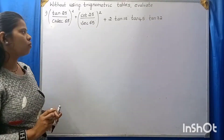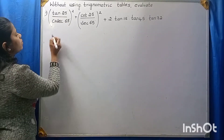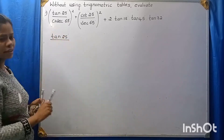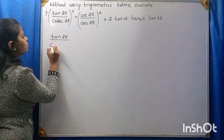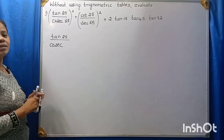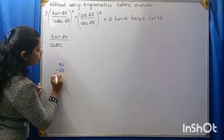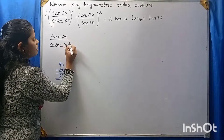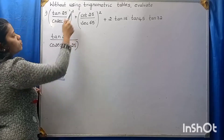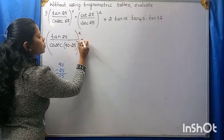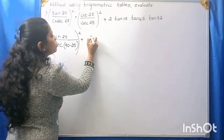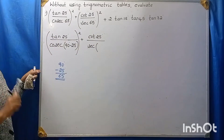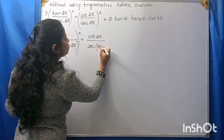Let's evaluate the value of this. Tan 25° divided by cosecant 65°. This 65 I can write as 90° minus 25°, because 90 minus 25 is 65. Therefore, this 65 I will write as 90° minus 25°. Whole square plus cot 25° divided by secant — this 65° I can write as 90° minus 25°.